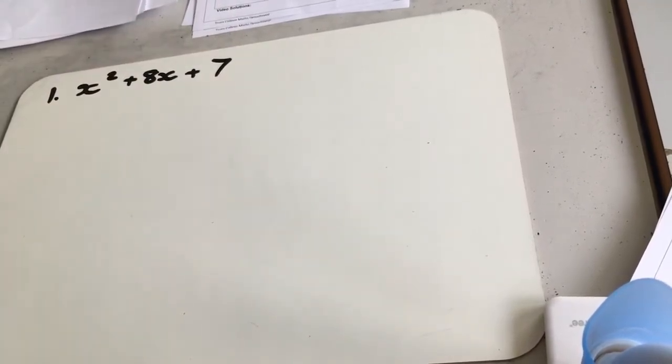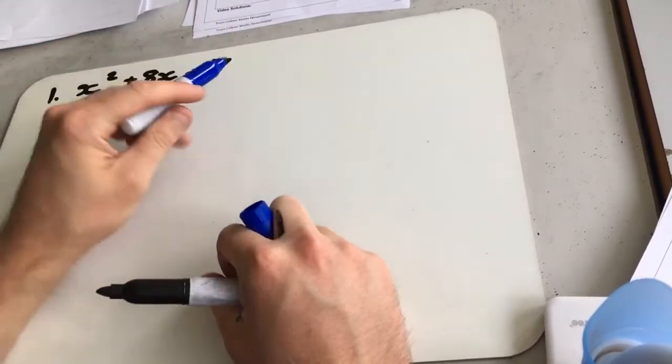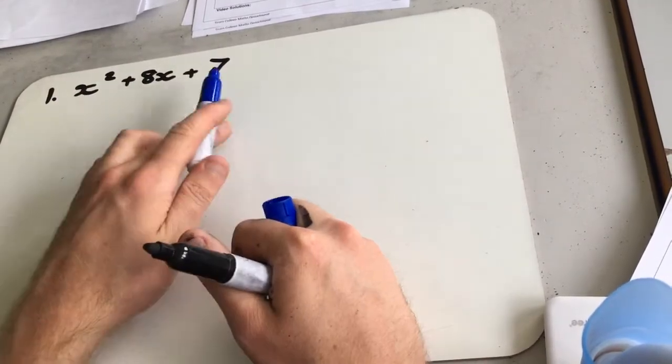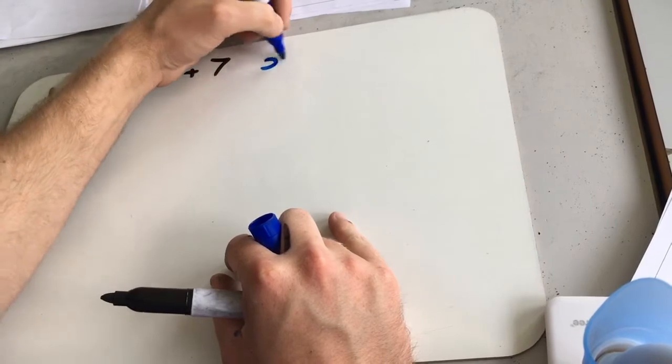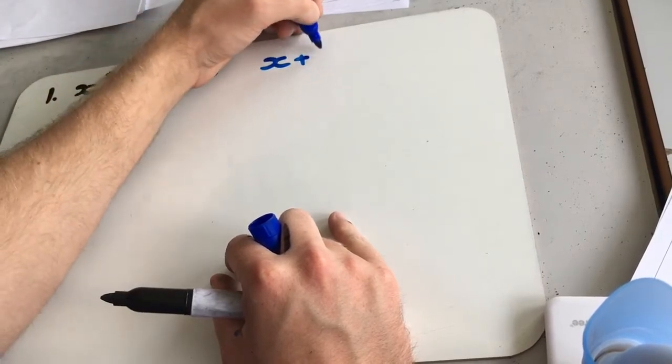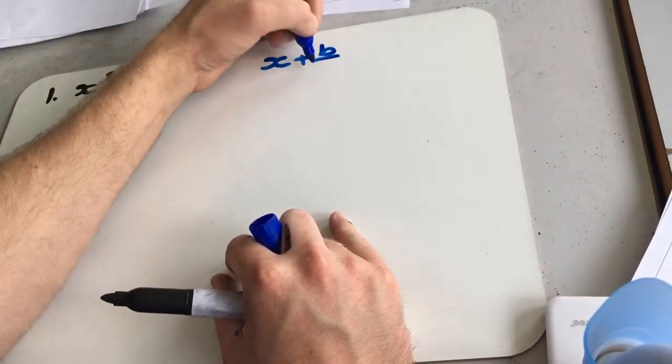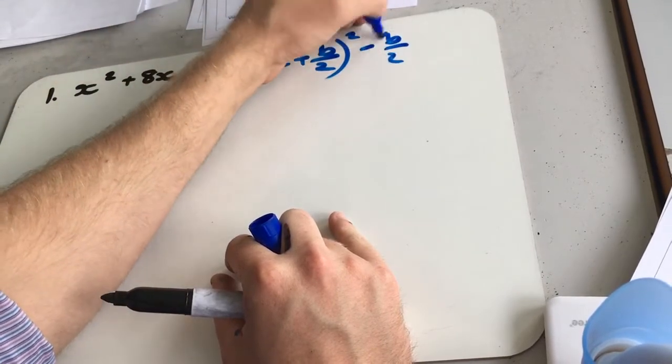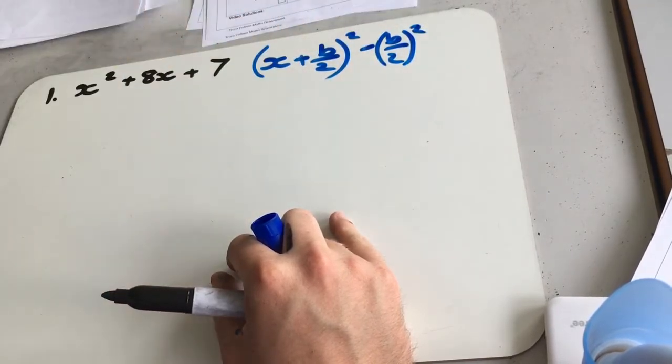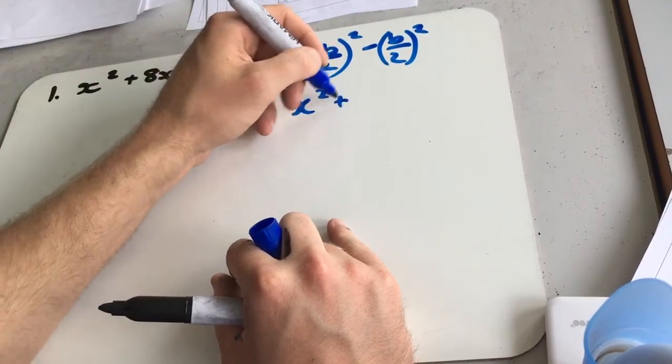So the trick to these is to ignore the plus 7s. We're just going to leave this outside of our complete square and worry about it at the end. So to complete the square, remember we're writing things in the form x plus b over 2 squared minus b over 2 squared. And that's from x squared plus bx.